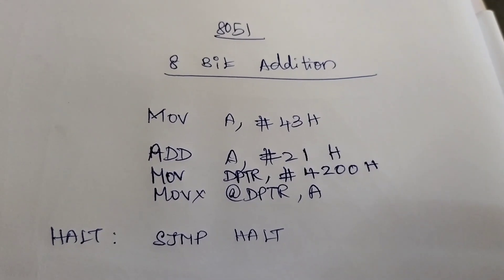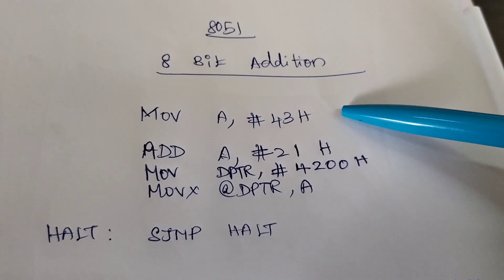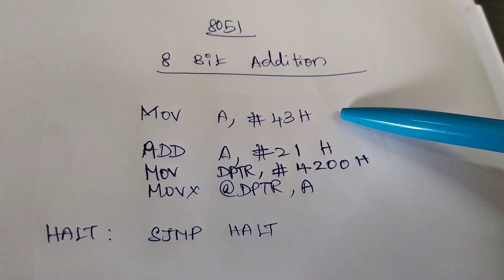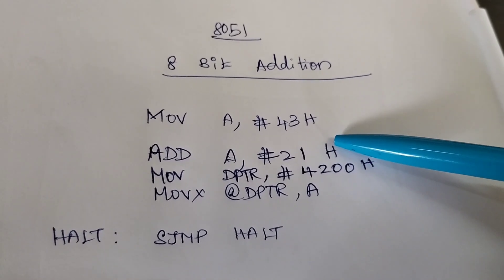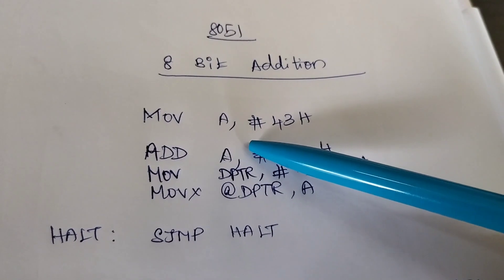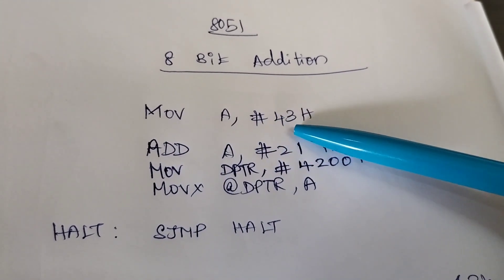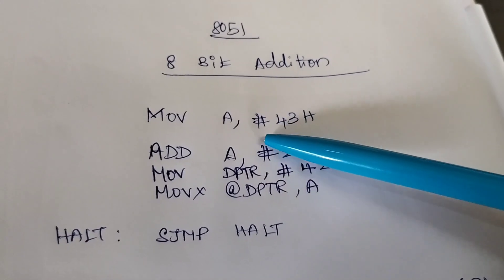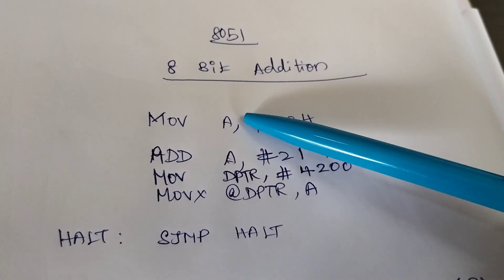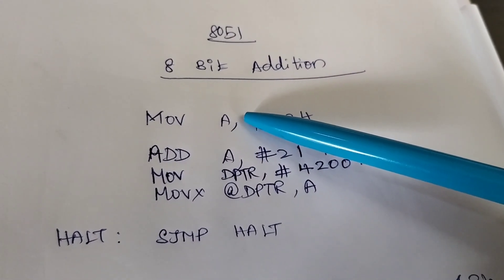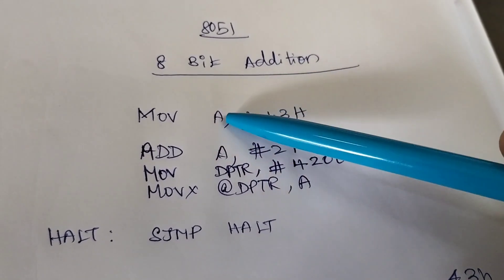So 8-bit addition means we have 2 datas, 8-bit datas we are going to add. Here we are considering the first data as 43, second data as 21 and our first instruction is MOV A, #43H. So what is the meaning? Here this is immediate addressing mode. So the data 43 is moved to A register, that is accumulator.